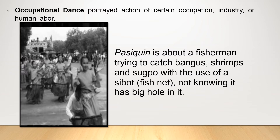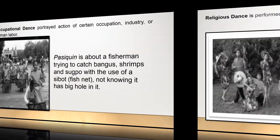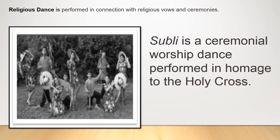Pasikin is about a fisherman trying to catch bangus, shrimps, and sugpo with the use of a sea boat or fish net, not knowing it has a big hole in it. Religious dance is performed in connection with religious vows and ceremonies.